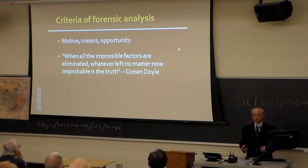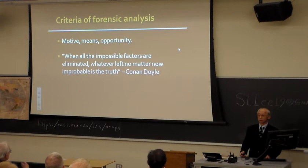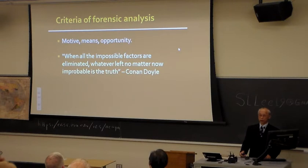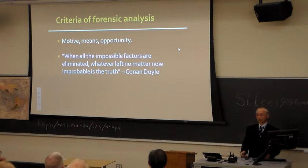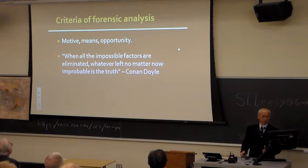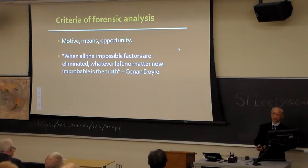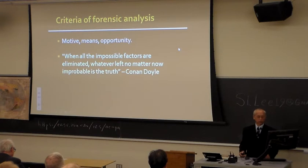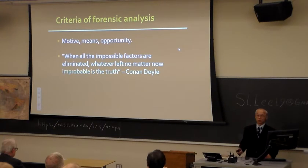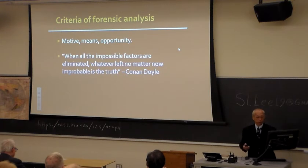First of all, as a detective, some very basic things to be concerned with are motive, means, and opportunity — that's how you find a murderer. You have to have motive, means — what kind of weapon — and the time. One very important quote is by Conan Doyle, the author of Sherlock Holmes: 'When all impossible factions are eliminated, whatever is left, no matter how improbable, is the truth.'